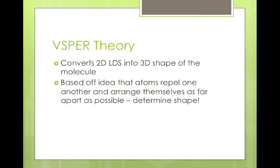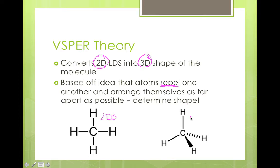We then continue the process with something known as VSEPR theory. It converts the two-dimensional Lewis dot structure into the three-dimensional representation of what the actual molecule looks like. It's based off the fact that atoms repel one another and arrange themselves as far apart as possible. VSEPR theory starts with a Lewis dot structure and converts it into a three dimensional model, and we get the tetrahedral shape that is commonly associated with carbon being a central atom.